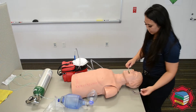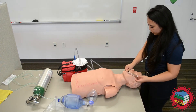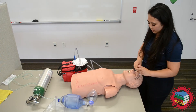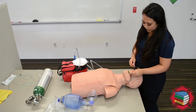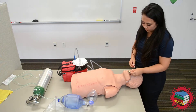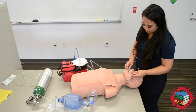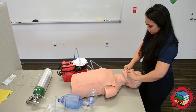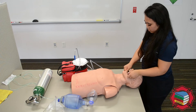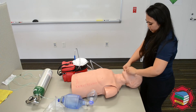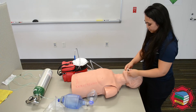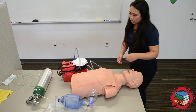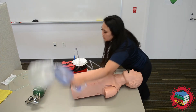I'm going to go ahead and secure my patient's airway using an OPA. I'm going to measure the OPA from the front teeth to the angle of the jaw. Rotate it ninety degrees. No gag reflex is present. The patient accepts the airway.